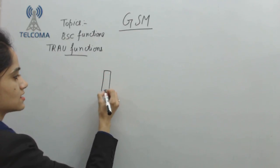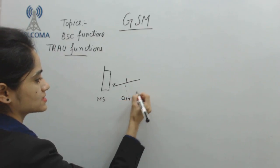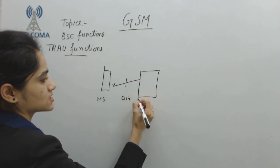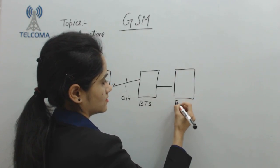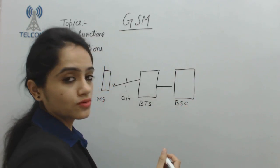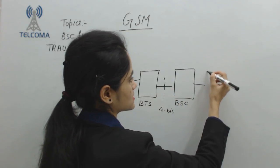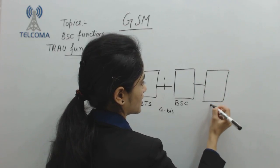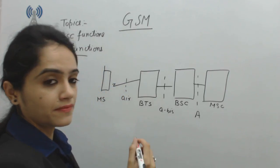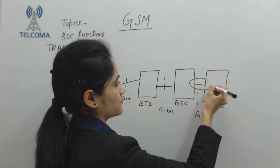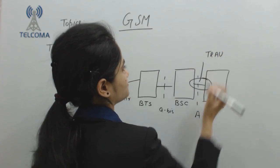This is the mobile station. With the help of the Um interface, this mobile station is attached to BTS. This BTS is attached to BSC with the help of the Abis interface, and BSC is further attached to MSC via the A interface. Between BSC and MSC, we have a functional entity which is TRAU.